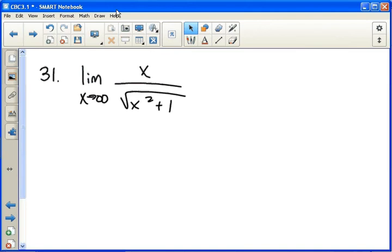Alright, so the limit as x approaches infinity, we have x on top and square root of x squared plus one on the bottom. They're both going to infinity, so let's take the derivative.